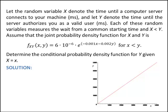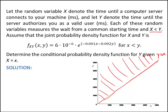Let the random variable x denote the time until the computer server connects to your machine, and let the random variable y denote the time until the server authorizes you as a valid user. Each of these random variables measures the wait time from a common starting time, and we're given that y is greater than x. In this diagram I've mapped out the valid region where the joint probability density function is defined. We know both x and y are positive, but since y is greater than x, I've drawn the line y equals x, and the region above this line is where the joint PDF is defined.